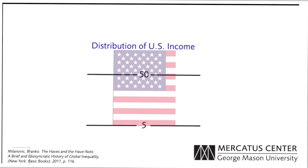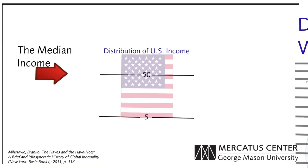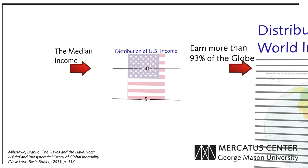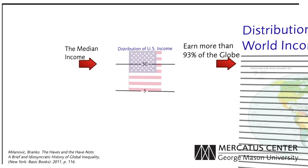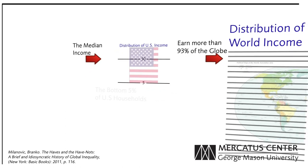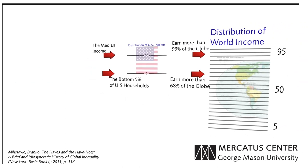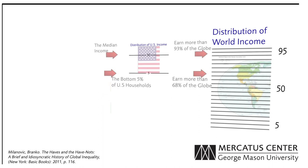The data show that compared to the global distribution of income, the U.S. distribution of income is relatively narrow and high earning. The median U.S. household earns more than 93% of the world's households, while the bottom 5% of U.S. households earns more than 68% of global households.